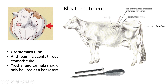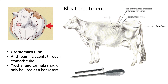The third option is a trocar and canula, used as a last resort when the bloat is so severe that the other two options do not work. The trocar has a very sharp edge like a chisel, and the canula is a small tube. The trocar is placed in this area of the body of the cow to make a small opening, penetrating the skin to go into the stomach. The canula is then inserted through this opening and keeps the passage open so the gas inside the stomach can escape through the tube out into the air.